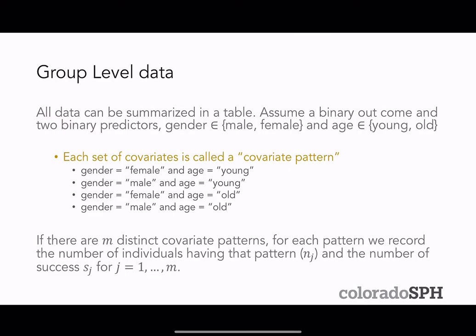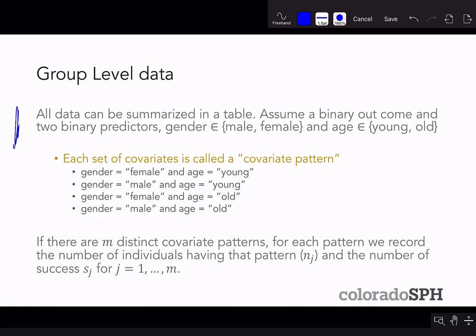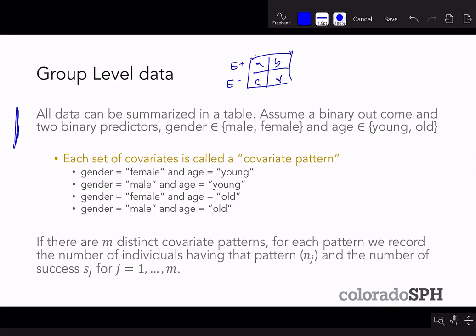Here's an example of group-level data. In group-level data, all data can be summarized in a table form. When you saw two-by-two tables in one of the previous lectures, that's group-level data — you have some table with frequencies, where you might have exposure and non-exposure, and then disease and no disease as outcome and covariate. Group-level data isn't limited to two-by-two tables, but it is limited to data that can be summarized in a table, meaning you can't have any continuous covariates.